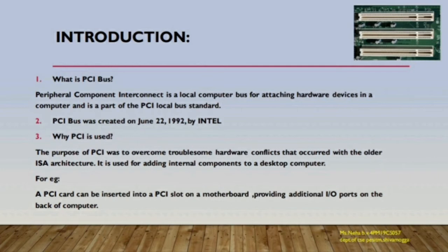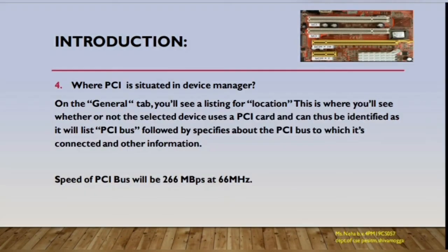What is ISA architecture? In computer science, an Instruction Set Architecture (ISA) is an abstract model of a computer, also referred to as architecture or computer architecture. A realization of an ISA, such as a Central Processing Unit (CPU), is called an implementation.